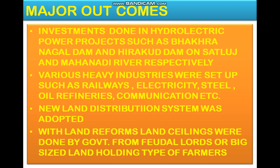As mentioned in earlier modules, in the first five-year plan we focused on land reforms and a new land distribution system. In the second five-year plan, when the new land distribution system was adopted, various land holdings were acquired by the Government of India from feudal lords or big-size landholding farmers, and these lands were distributed among the poor farmers.